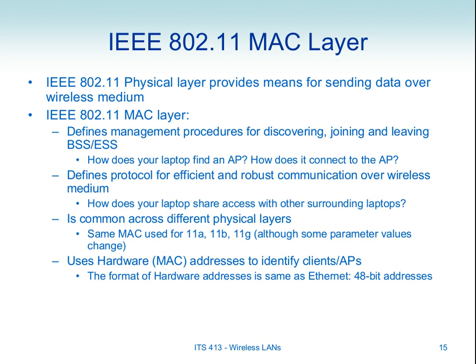The MAC layer uses 48-bit hardware addresses — the same Ethernet addresses used in wired LANs, defined by IEEE. Because wireless uses broadcast radio, multiple devices may receive a transmission. The destination address tells each device whether it should process the frame or ignore it. A source address tells receivers who to respond to.